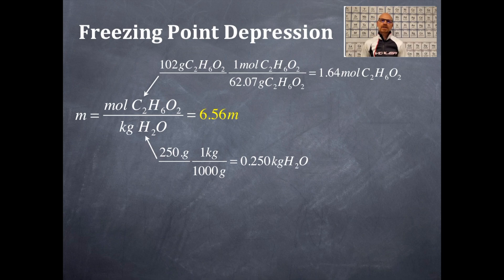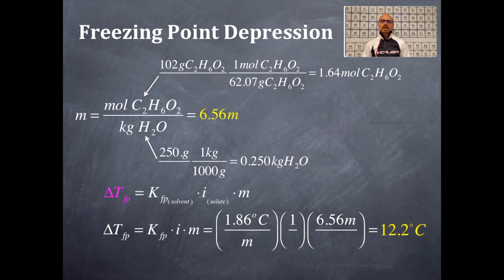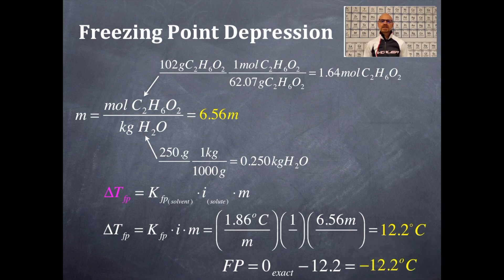Now I have all the components to solve the problem. The change in temperature equals K times I times molality: 1.86 degrees Celsius per molal, times 1 for the Van't Hoff factor, times 6.56 molal, giving 12.2 degrees Celsius. The freezing point of water is zero, so it's zero minus 12.2, giving negative 12.2 degrees Celsius. That means if I have 250 grams of water and add 102 grams of ethylene glycol, the solution will not freeze until it reaches negative 12.2 degrees Celsius.